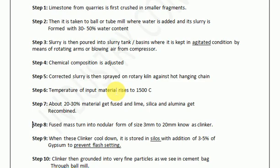In step 6, the temperature raises from normal temperature to 1500 degrees Celsius. This is what converts the raw material into cement. In step 7, when the raw material or slurry reaches such a high temperature, about 20 to 30 percent of the material gets fused and lime, silica, and alumina get recombined through chemical reactions.